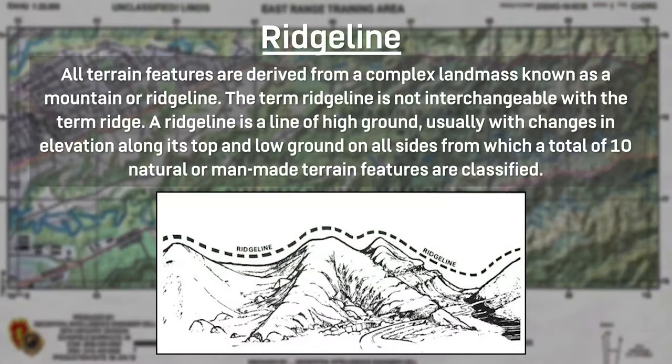To determine where you are you need to be able to self-locate. There are a few methods to self-location. The first method is terrain association. In order to conduct terrain association you need to be able to identify and understand each terrain feature. All terrain features are derived from a complex land mass known as a mountain or a ridge line. The term ridge line is not interchangeable with the term ridge, which we will discuss in a moment. A ridge line is a line of high ground usually with changes in elevation along its top and low ground on all sides.